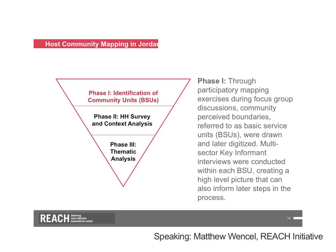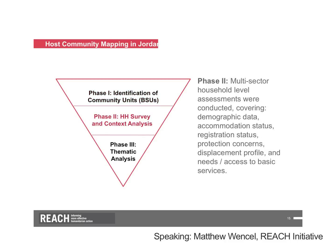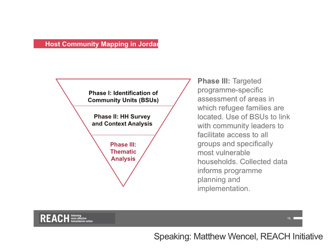This gave us a high-level picture of the situation that would inform later steps. In the second phase, we conducted a detailed household-level assessment in each of the BSUs, covering demographic data, accommodation status, registration status, protection concerns, displacement profile, and needs or access to basic services. This effectively amounted to a census of Syrian refugees living in host communities, as we visited all known refugees according to our key informants. The third phase included more detailed sector-specific assessments and updates to Phase 1 and 2 datasets. Data from all phases was shared with other actors, along with a contact list of community leaders and vulnerable populations, directly feeding into programming and targeting efforts.